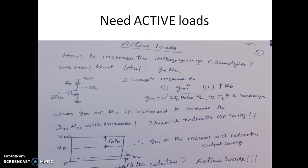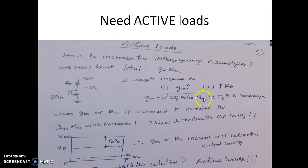There are two ways of increasing the gain of the amplifier: you increase the value of GM or increase the value of RD. How do we increase the value of GM? GM is given by the expression: square root of 2·ID·μ₀ₓ·(W/L). So we can increase the GM value by increasing the ID current.